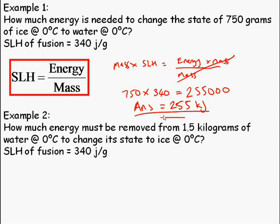Example 2. Very similar to example 1, apart from this time we're removing heat energy. This is just to point out to you that specific latent heat of fusion works just as well for freezing as it does for melting.